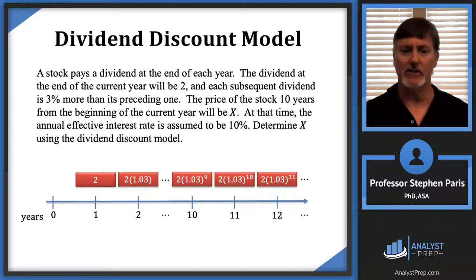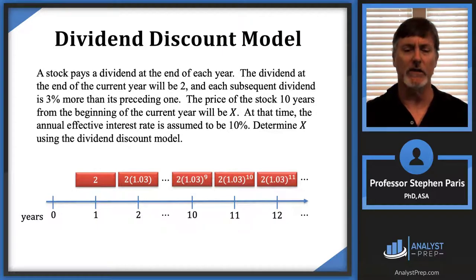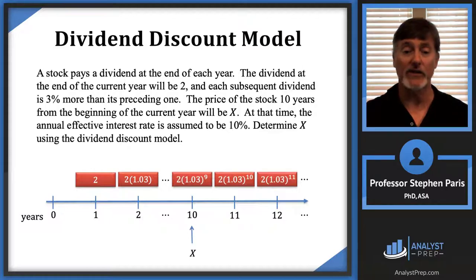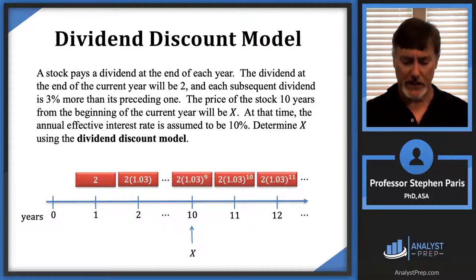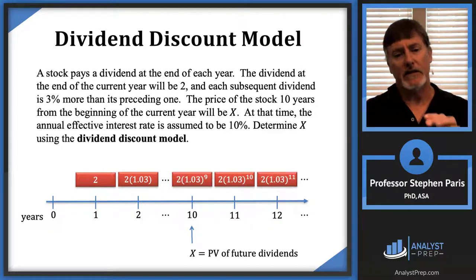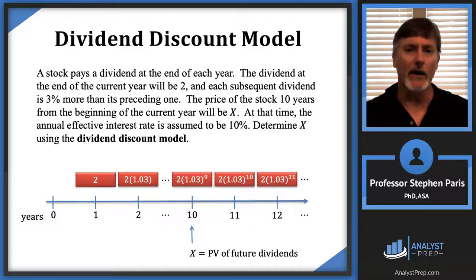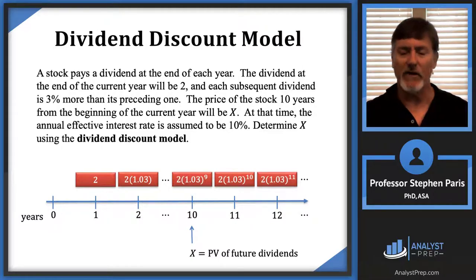This is what our timeline is going to look like. The dividend at the end of this year is going to be two, and subsequent dividends increase by three percent — a geometric progression of dividends. CapX is the price of the stock 10 years from the beginning of the current year, so that will be at time 10. When the problem says the dividend discount model, that's telling me to just take the present value of the future dividends, and that gives us a theoretical price of the stock.